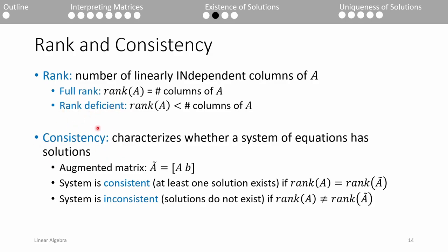The consistency of a system characterizes whether a system of equations has solutions. First, we need to form the augmented A matrix, A tilde. This is just the A matrix and the B vector concatenated horizontally. If the rank of A equals the rank of A tilde, then the system is consistent and we know at least one solution exists. Else, the system is inconsistent and there's no solution. To recap, solutions exist if the system is consistent. To determine consistency, we need to know the ranks of A and A tilde. To know the rank, we need to understand linear independence. This is how they're all related.